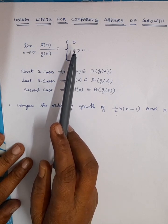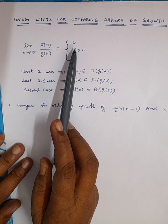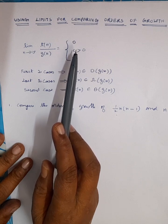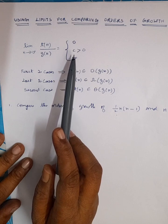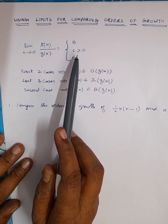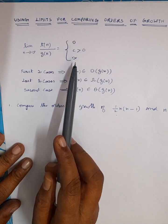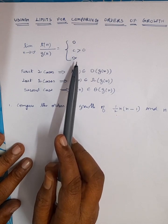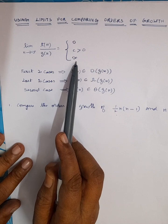The first case implies that t(n) has a smaller order of growth than g(n). The second case implies that t(n) has the same order of growth as g(n). The third case implies that t(n) has a larger order of growth than g(n).